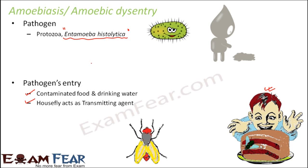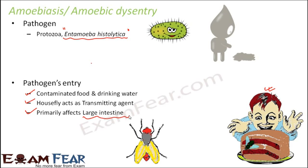If food or drinking water somehow gets contaminated with faeces, then that can become a source of infection. Once it enters the body, it primarily affects the large intestine. The large intestine is responsible for partially helping in digestion, but its most important job is ejection — the removal of undigested matter out of the body.